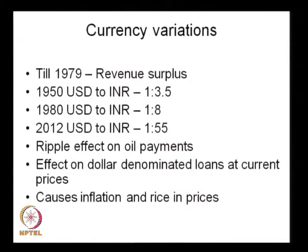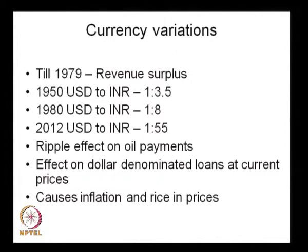Imagine the ripple effect considering our imports are more than our exports, especially when oil becomes very expensive. If we have US dollar-denominated loans, we need to pay more rupees to repay them. As a result of all of this, it causes inflation and a rise in prices. This is to tell you that between capital receipts and revenue receipts, we can afford to have a capital deficit, but our revenue deficit must always be within controllable limits — otherwise it will cause ripple effects leading to an inflationary regime.